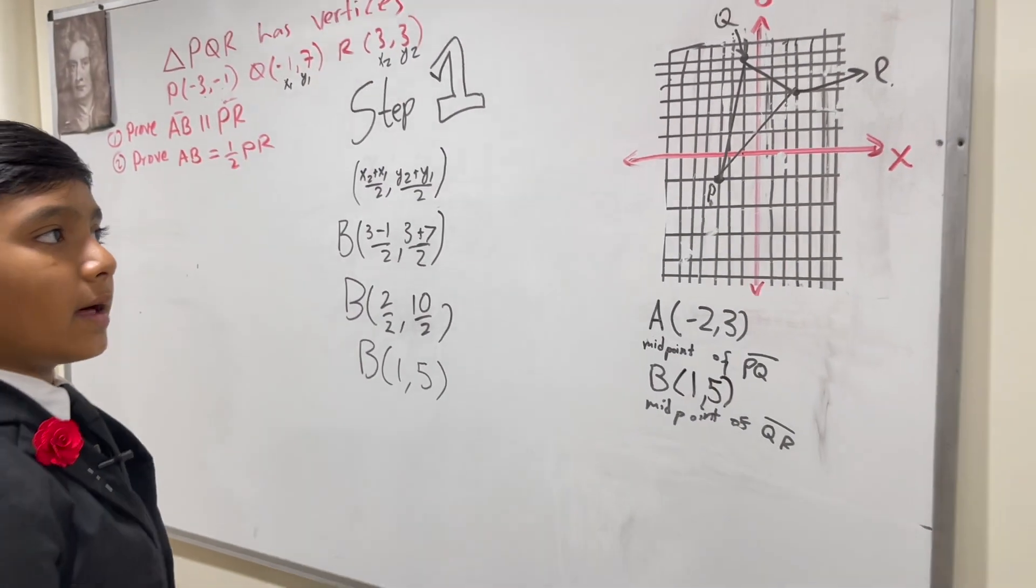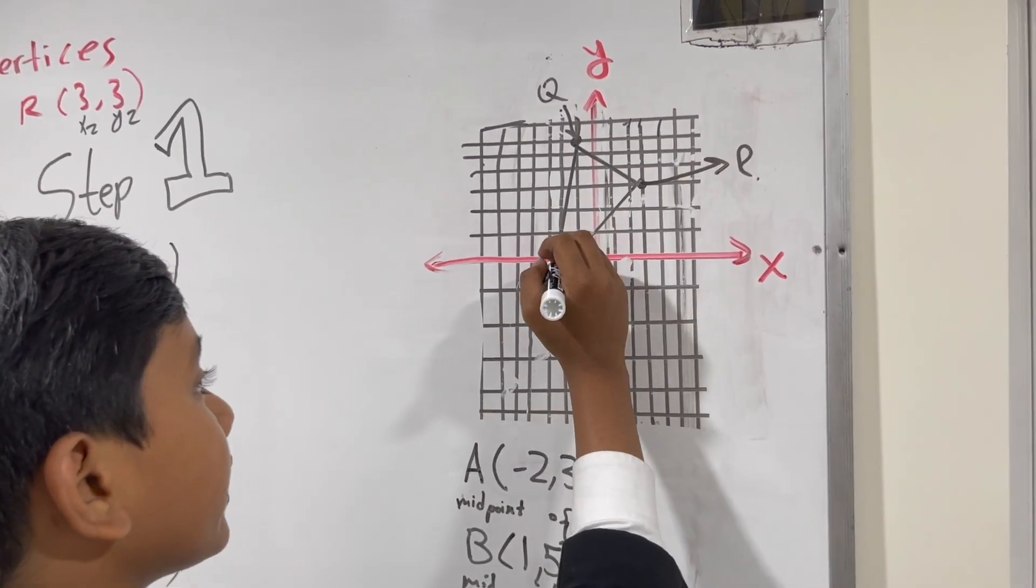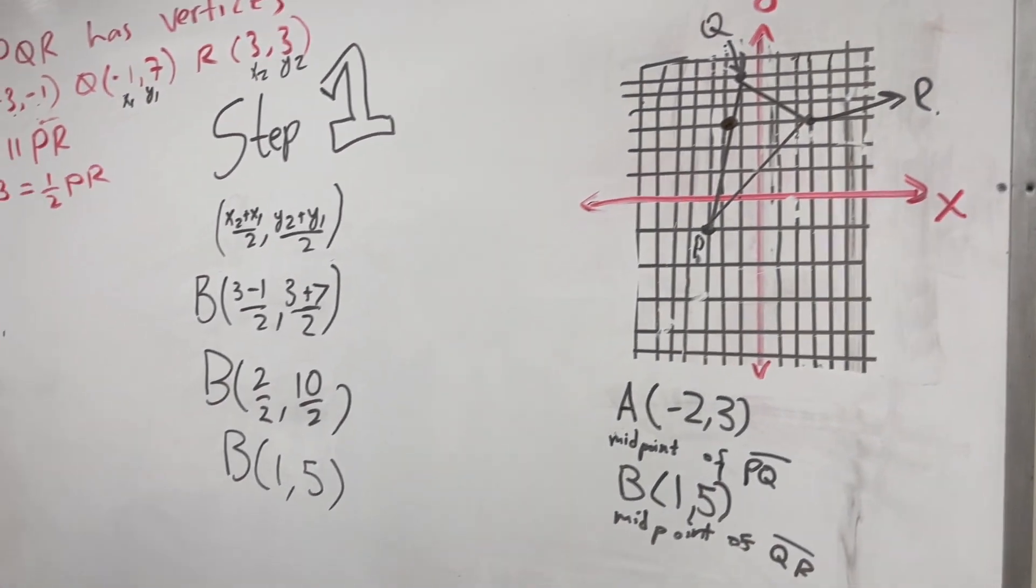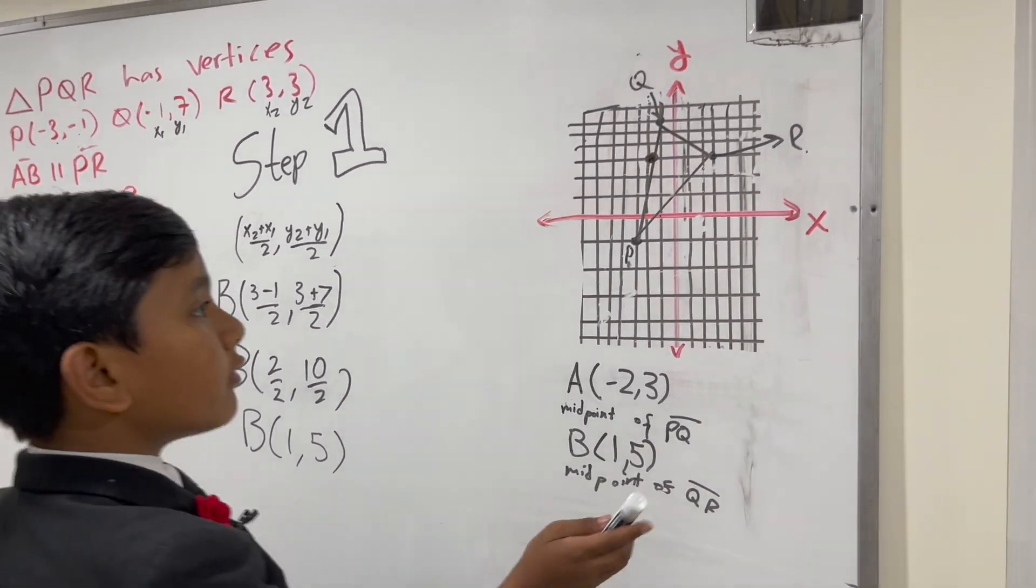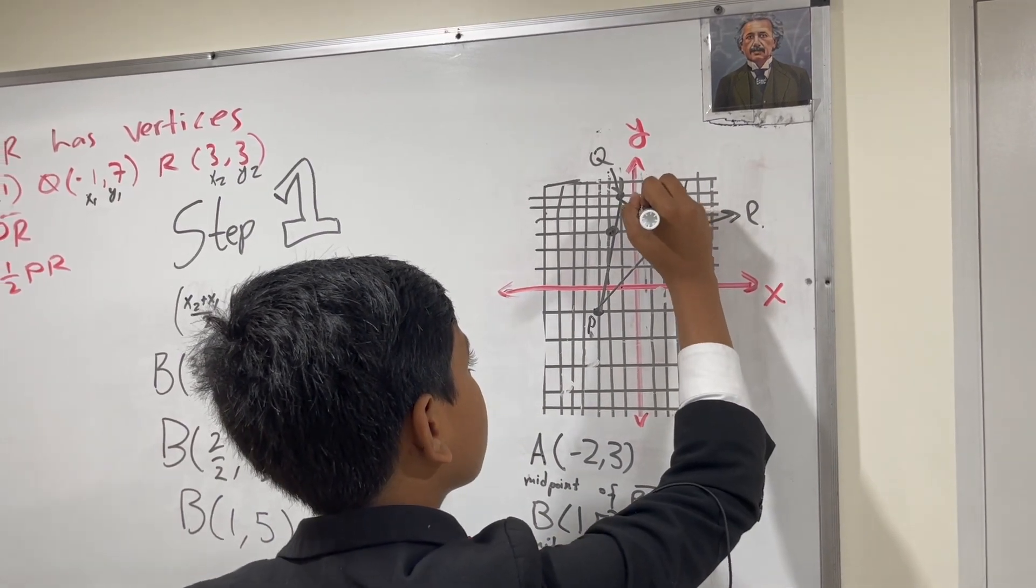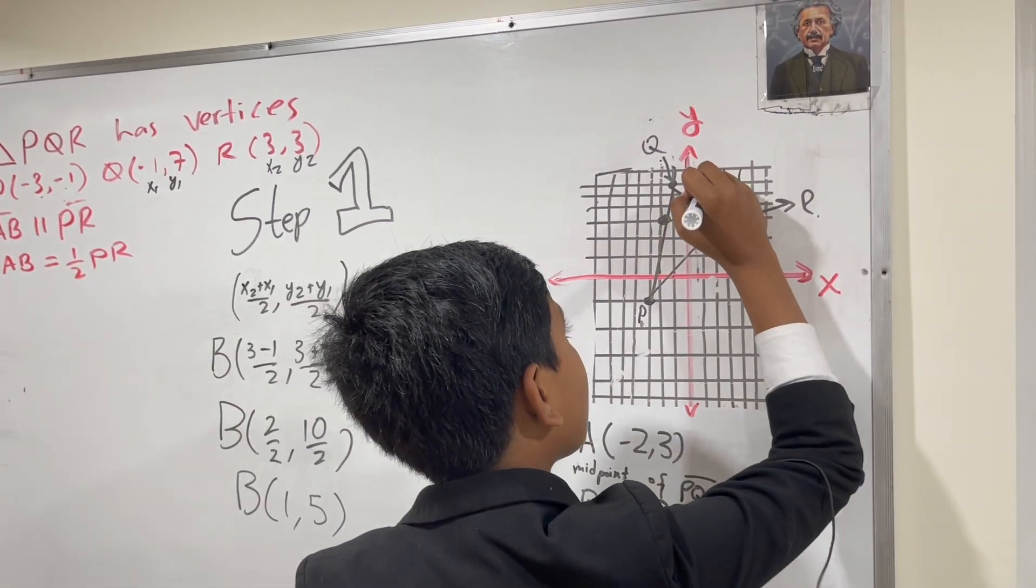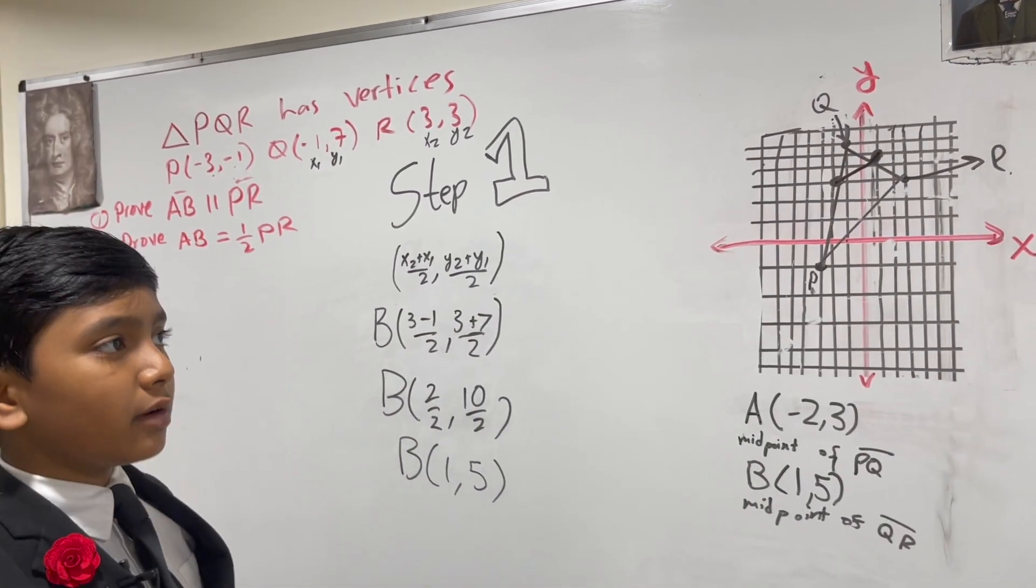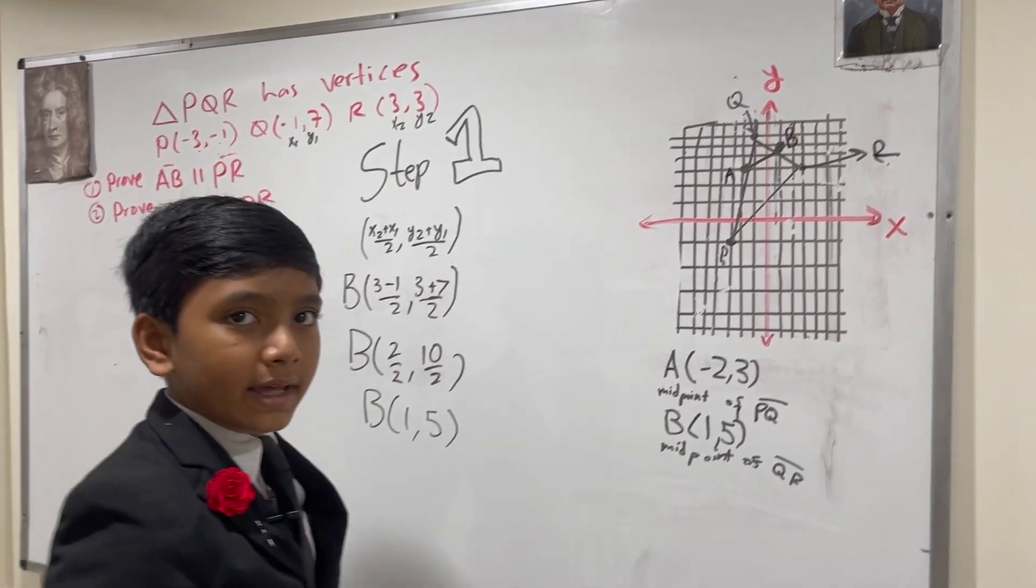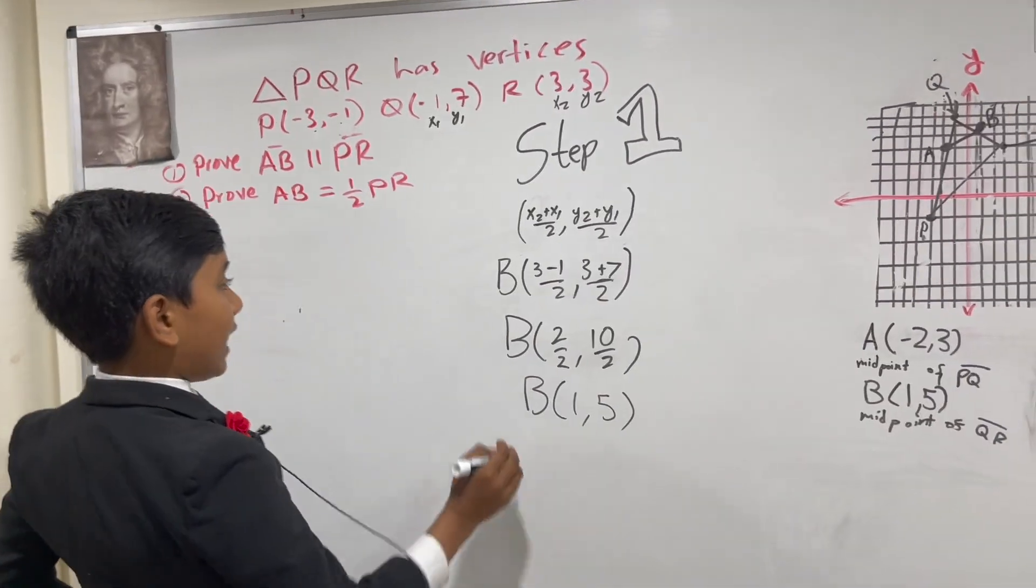So now we also know the coordinates of B. Let's draw them right over here. Negative 2 comma 3 is right about there. And 1 comma 5 is right over here. You might notice that AB looks parallel to PR. How do we prove that AB is parallel to PR? We're going to cover that in step 2.